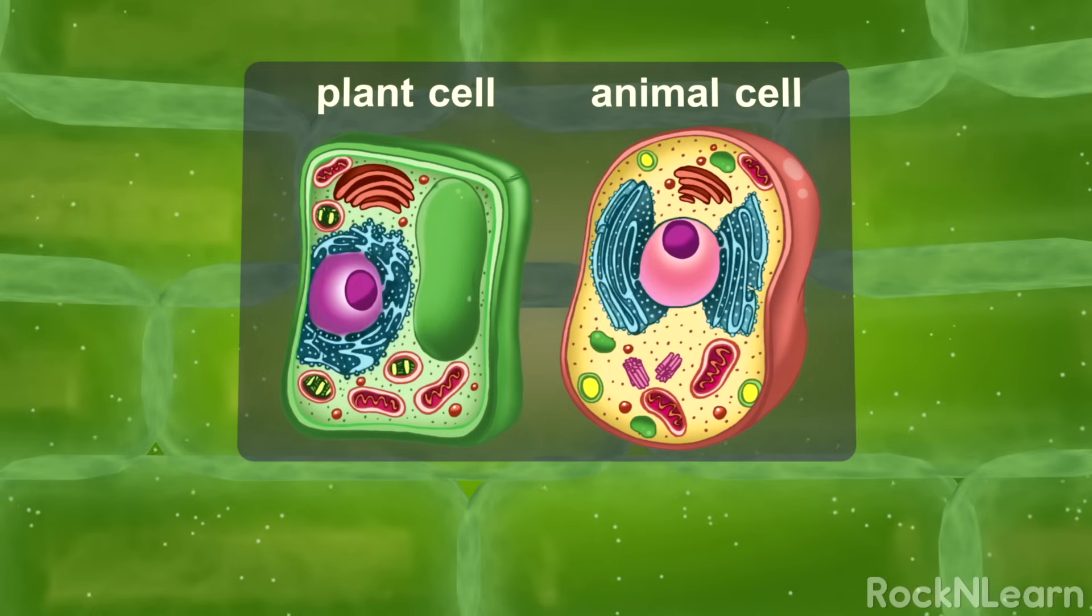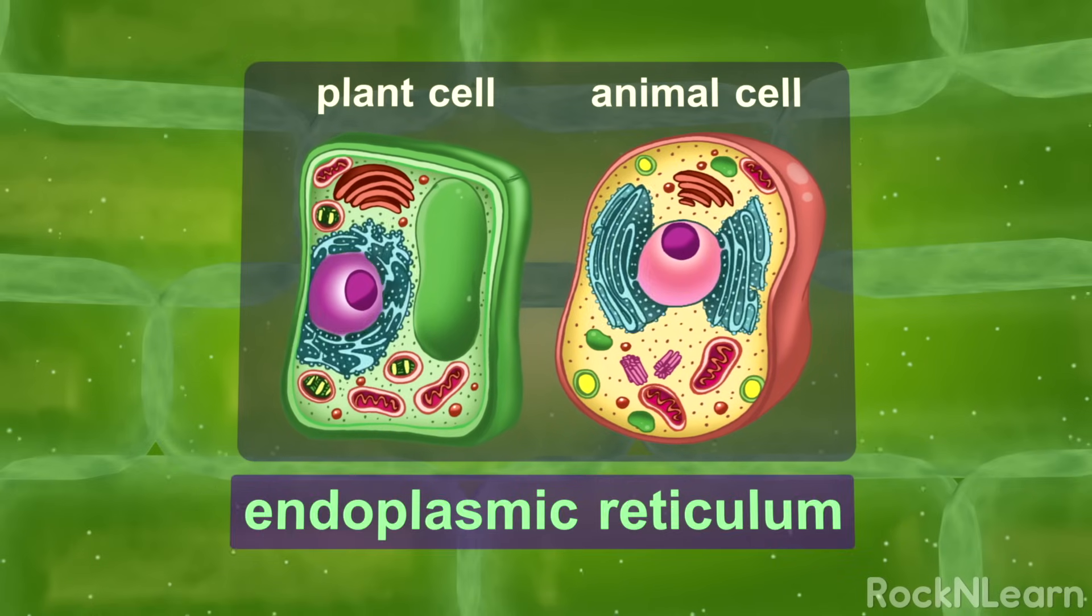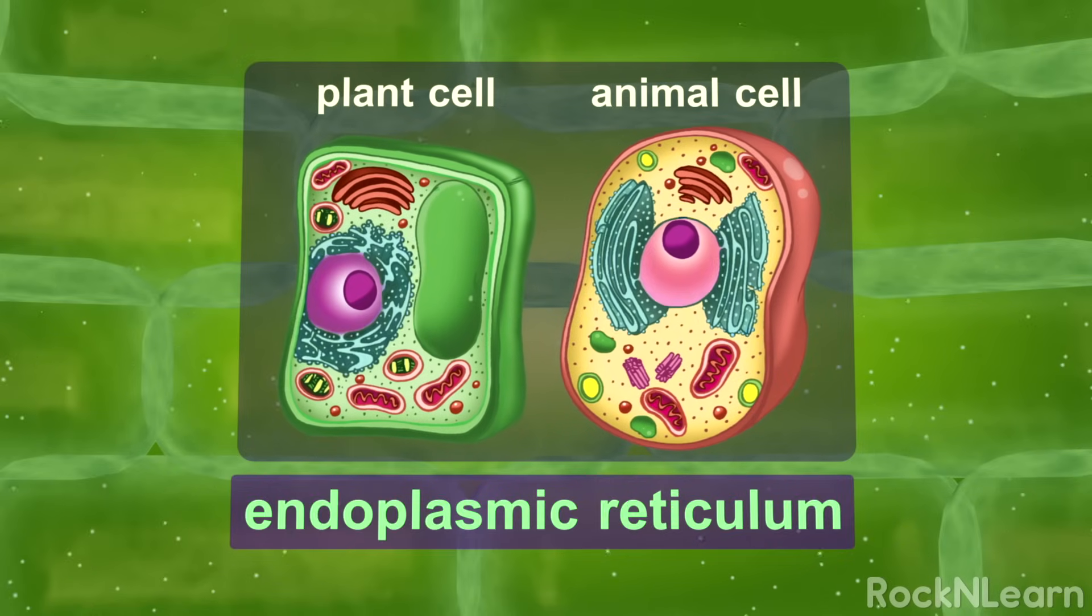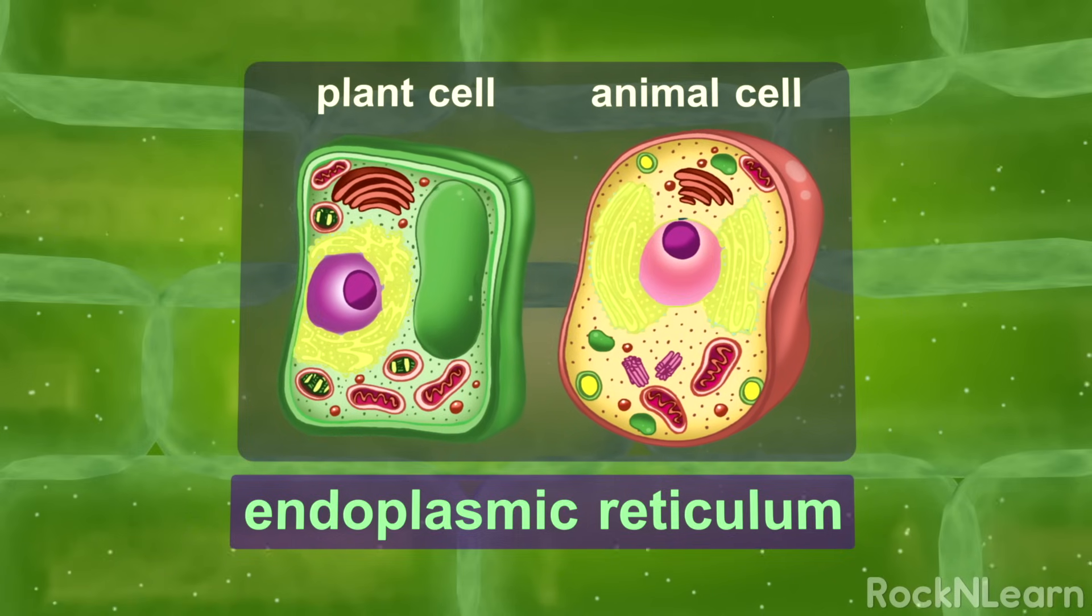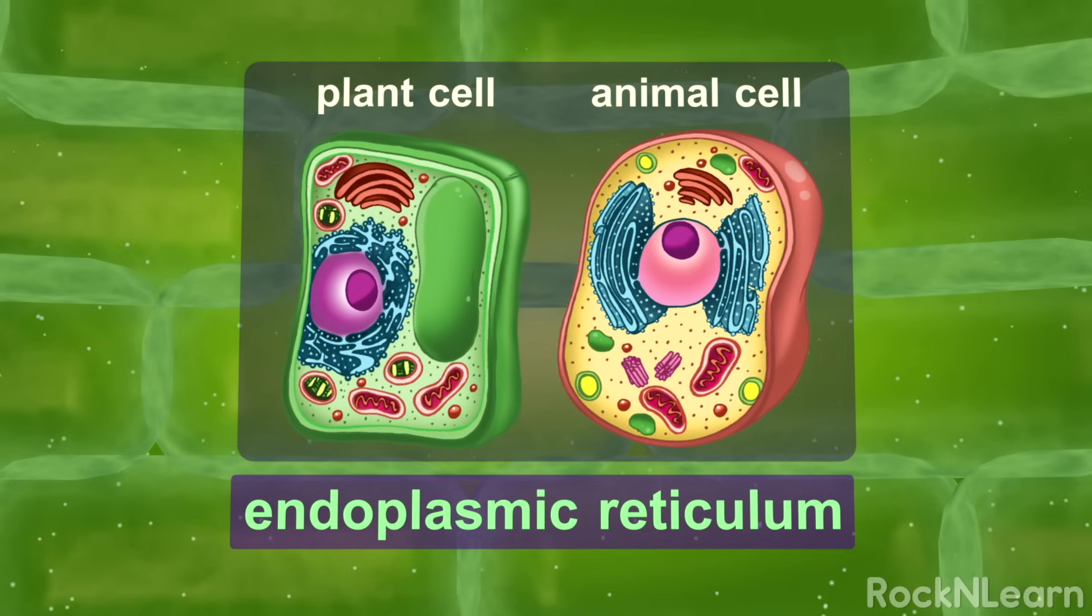The endoplasmic reticulum, or ER for short, is the transportation network. It takes the protein packages from the Golgi bodies and moves them to where they are needed around the cell.